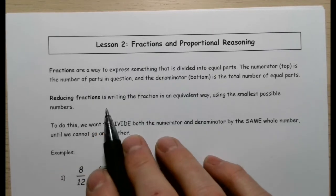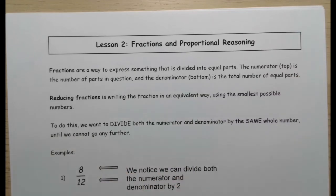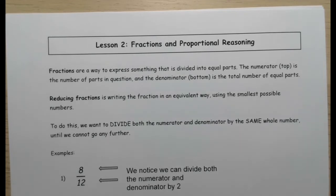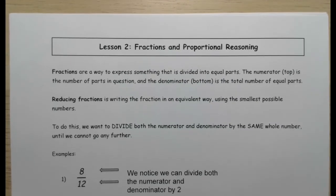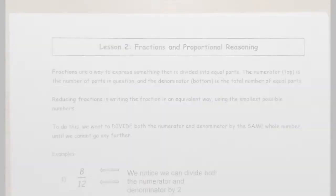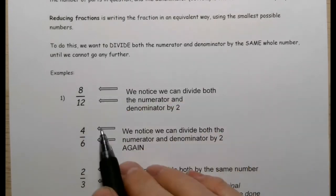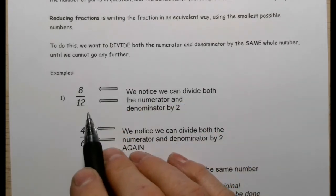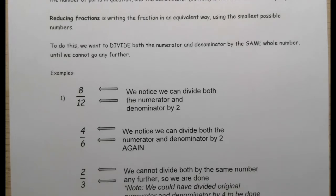We're going to keep removing common factors until we can't anymore. Let's look at some examples. The first example is eight-twelfths — our numerator is eight, our denominator is twelve. To get a visual on this, we're dividing up our circle here.